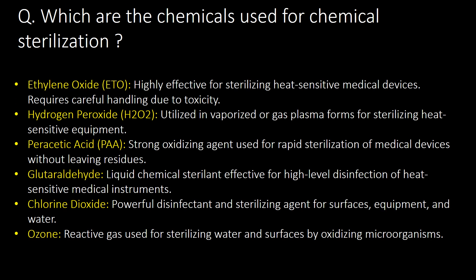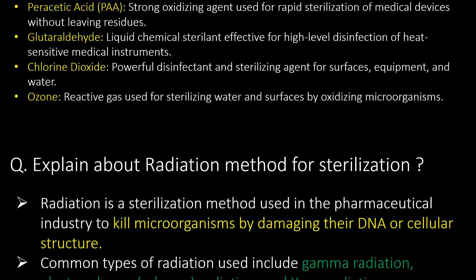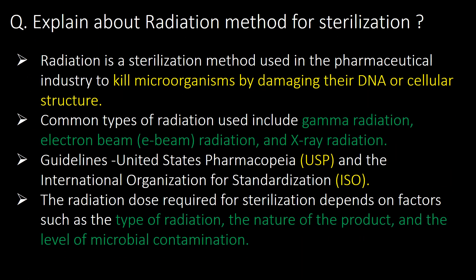Which chemicals are used for chemical sterilization? Ethylene oxide, hydrogen peroxide, peracetic acid, glutaraldehyde, chlorine dioxide, and ozone are the most commonly used chemicals for chemical sterilization.